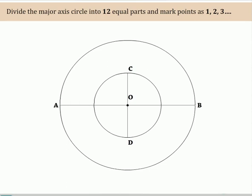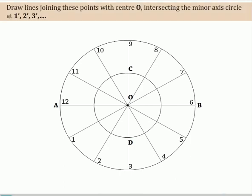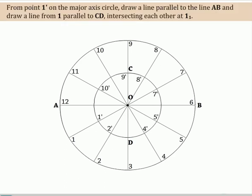Divide the major axis circle into 12 equal parts and mark the points as 1, 2, 3 etc. Draw lines joining these points with center O intersecting the minor axis circle at 1', 2', 3' etc. From point 1' on the major axis circle draw a line parallel to line AB and draw a line from 1 parallel to CD intersecting each other.